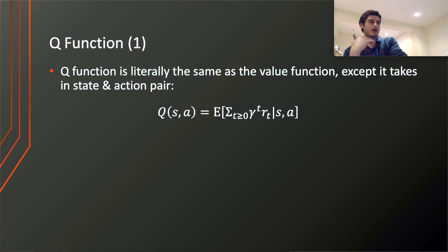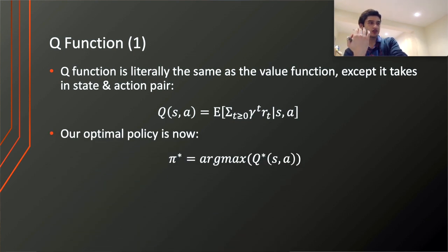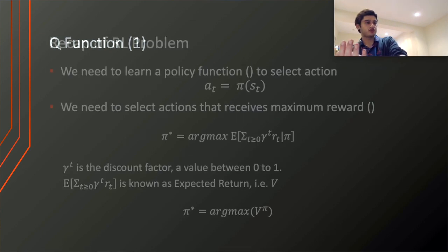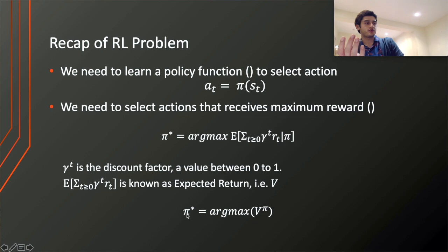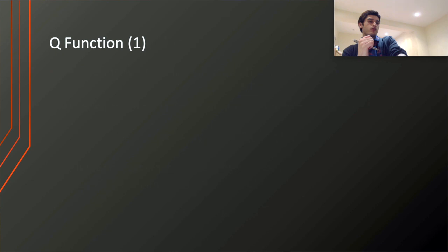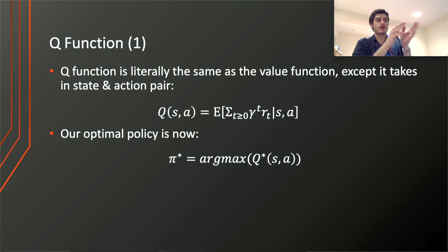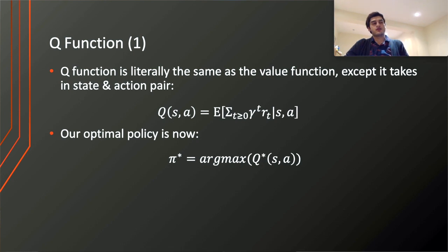The Q-value function can be substituted for the state value function in the same way. The optimal policy function is simply the maximum of the optimal action value function. What we also know is that these value functions — let's focus on the action value function since that is what we actively use — follow the Bellman rule; they obey the Bellman rule.